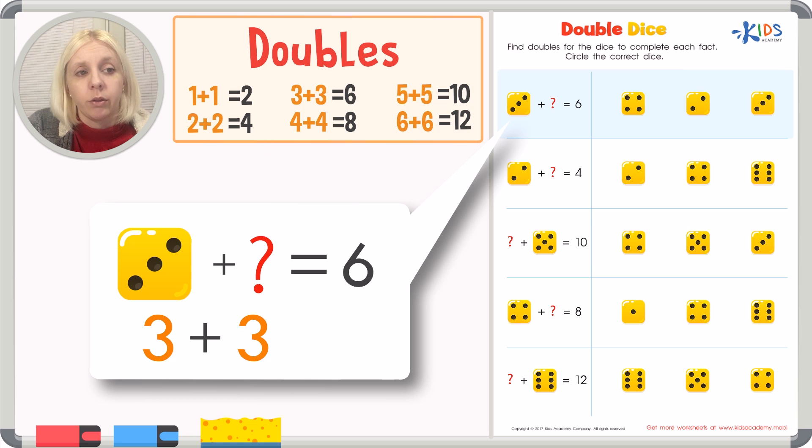We've even got this written out three plus something equals six. So if we knew our doubles facts and memorized that, we would know that three plus three equals six. But even if you haven't memorized all of these, all we're doing here is finding the double, which means kind of like the twin for this dice. So if we've got three here, we need to come over here and find the three. So we've got one dice with one, two, three, four.